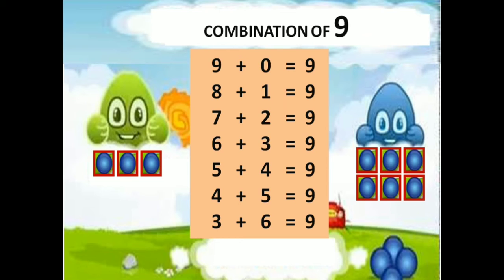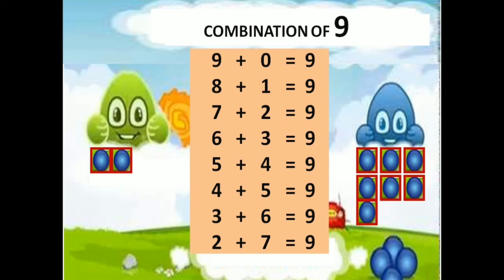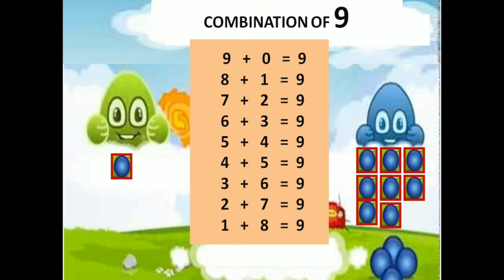Green doll having 3 balls, blue doll having 6 balls — 3 plus 6 equals 9. Green doll having 2 balls, blue doll having 7 balls — 2 plus 7 equals 9.